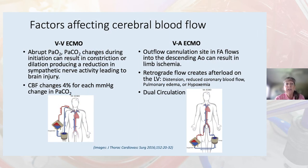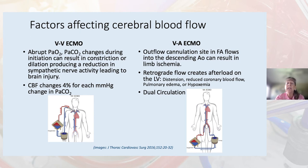Looking at factors affecting cerebral blood flow on VV ECMO versus VA ECMO, abrupt O2 and CO2 changes during initiation can result in constriction or dilation, producing a reduction in sympathetic nerve activity that may lead to brain injury. Incidentally, cerebral blood flow changes 4% for each millimeter of mercury change in CO2. On VA ECMO, outflow cannulation in the femoral artery flows into the descending aorta and can result in limb ischemia. Retrograde flow creates afterload on the left ventricle, causing distension, reduced coronary blood flow, or pulmonary edema and hypoxemia.